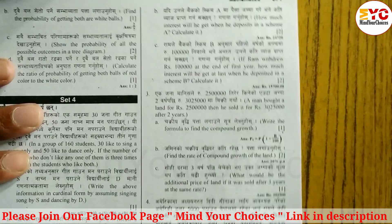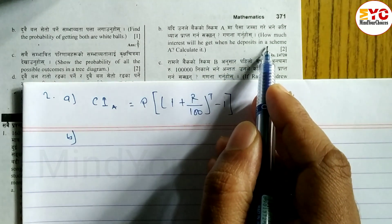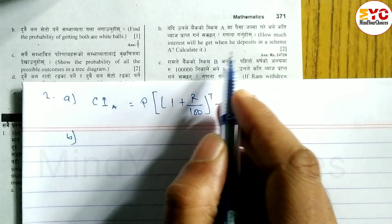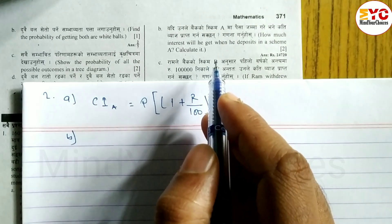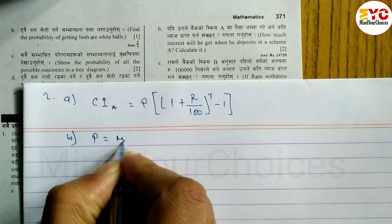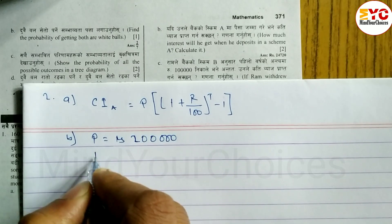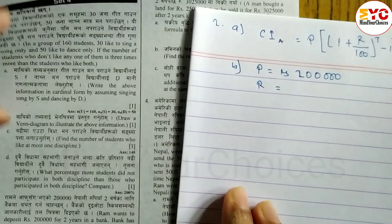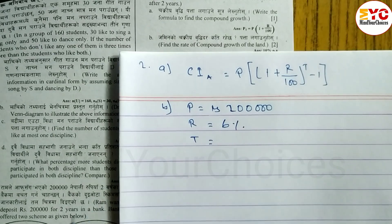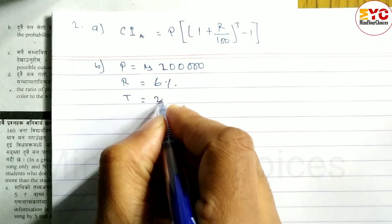Now for question number B: how much interest will Ram get when depositing in Scheme A? Principal P = Rs. 2 lakhs, Rate R = 6% yearly, Time T = 2 years.